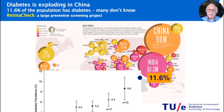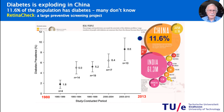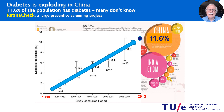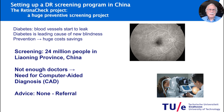This increase is staggering. In 1980, there was hardly any diabetes, and in 2013, when we started our project, it was 11.6%. This linear increase is not yet leveling off. So how do we measure these early signs of diabetes?